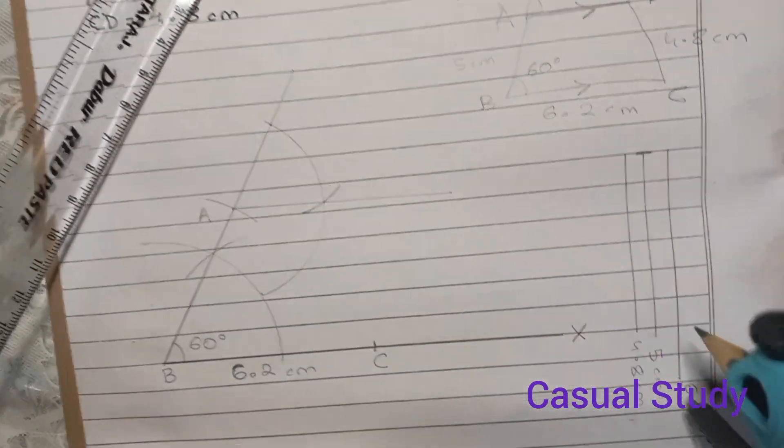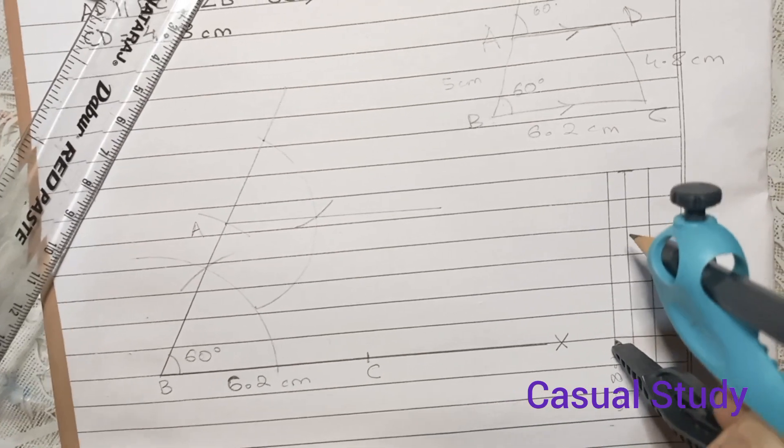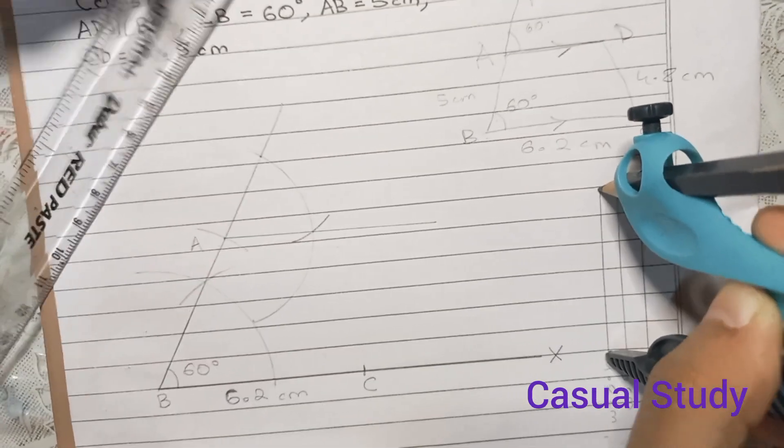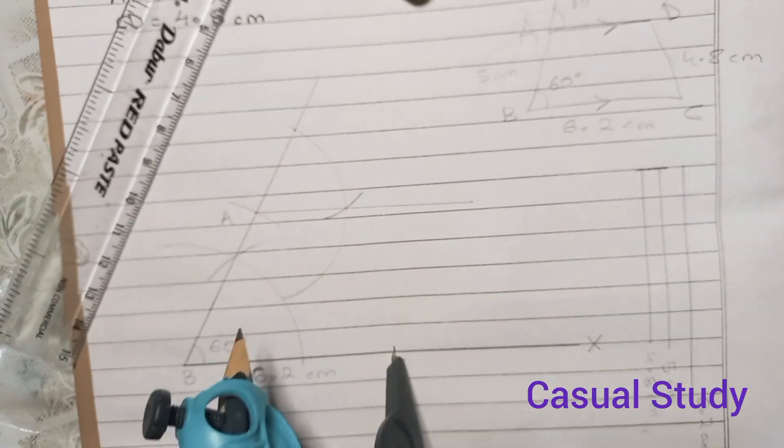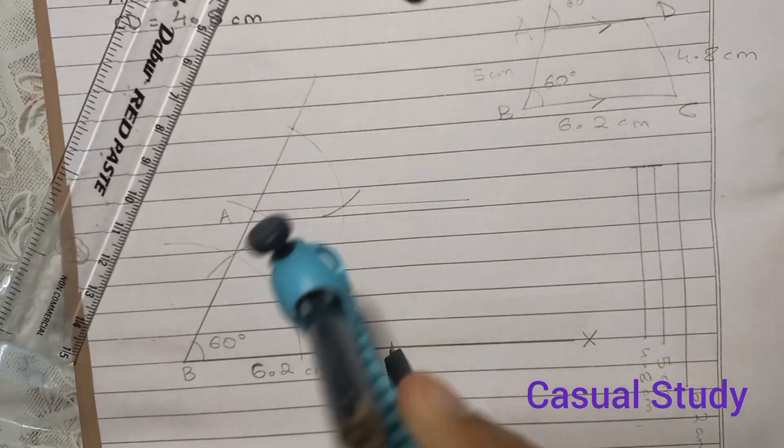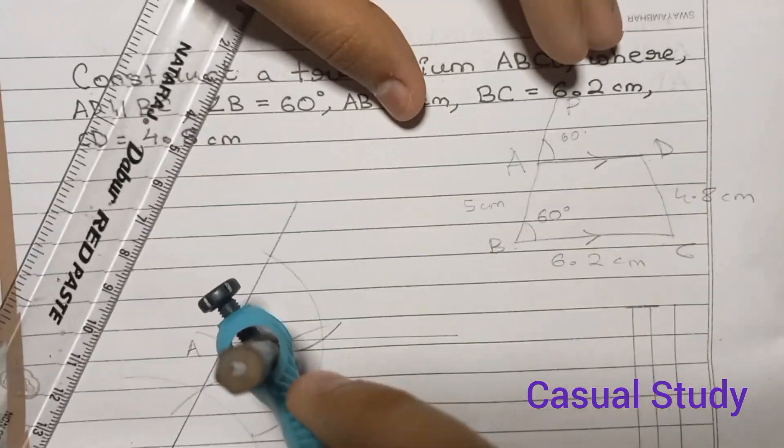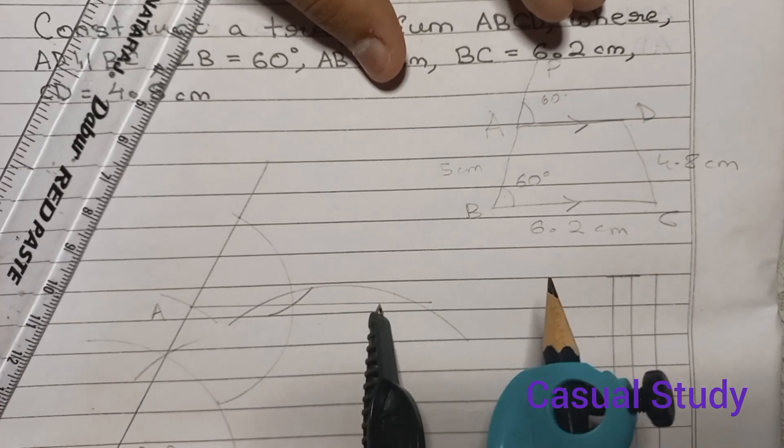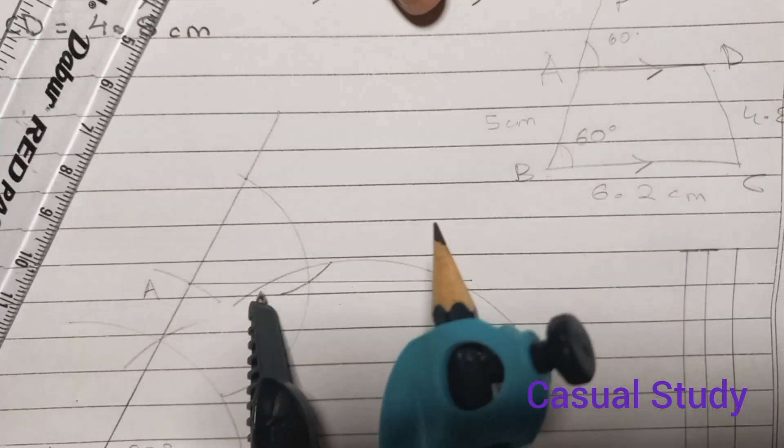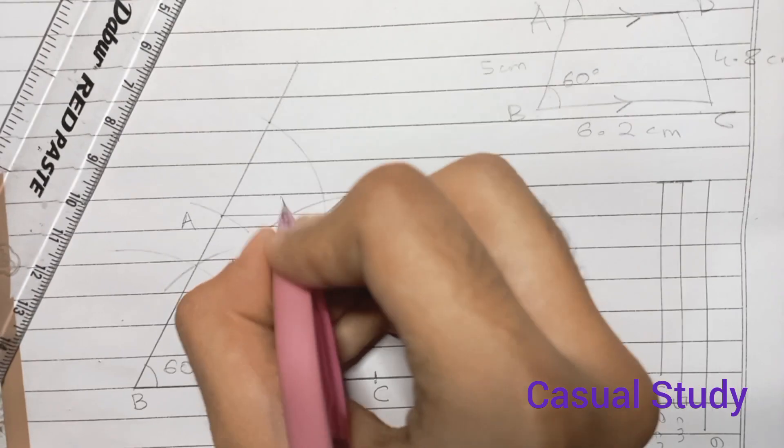Now we need to take the measurement of 4.8 cm. We will keep our pointer at C and then cut off 4.8 cm. If we extend it, it will be intersecting this line segment at two points. We will be taking the intersection that is closest to our point A. So we will now be marking this point as D.